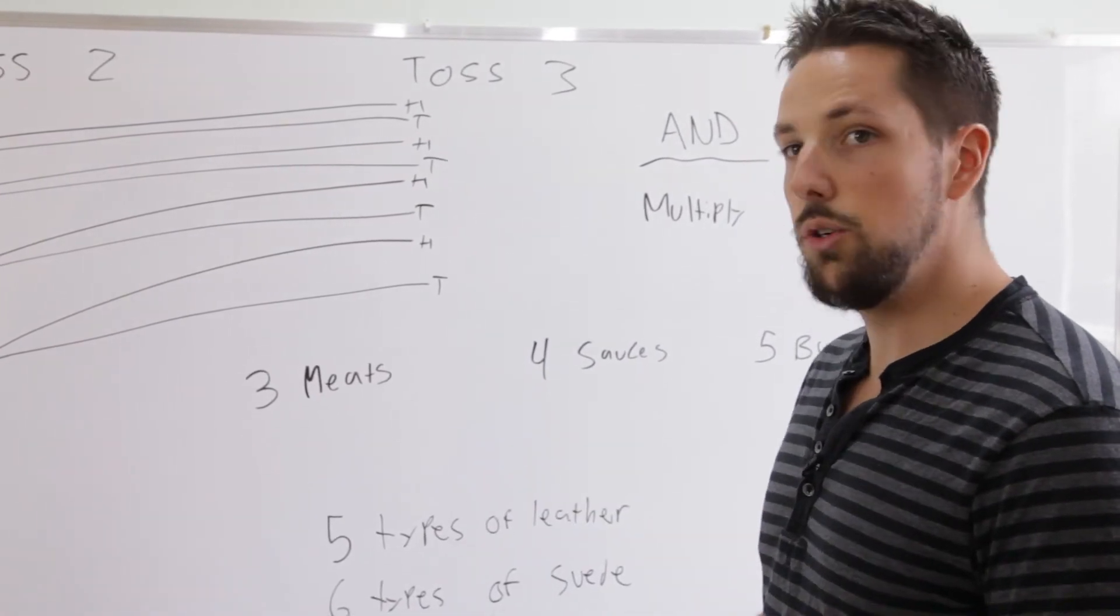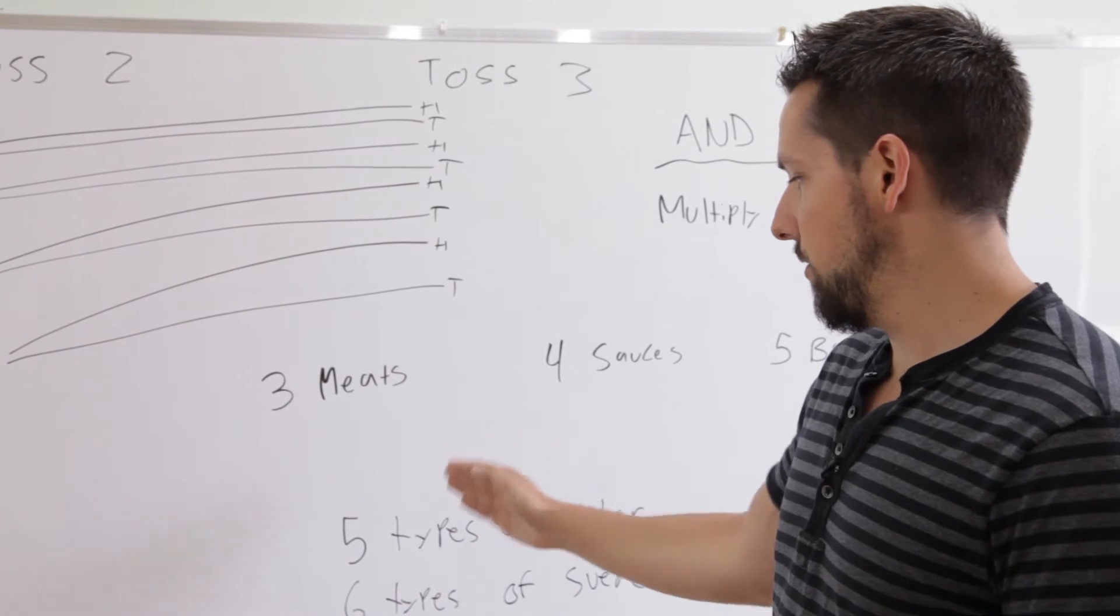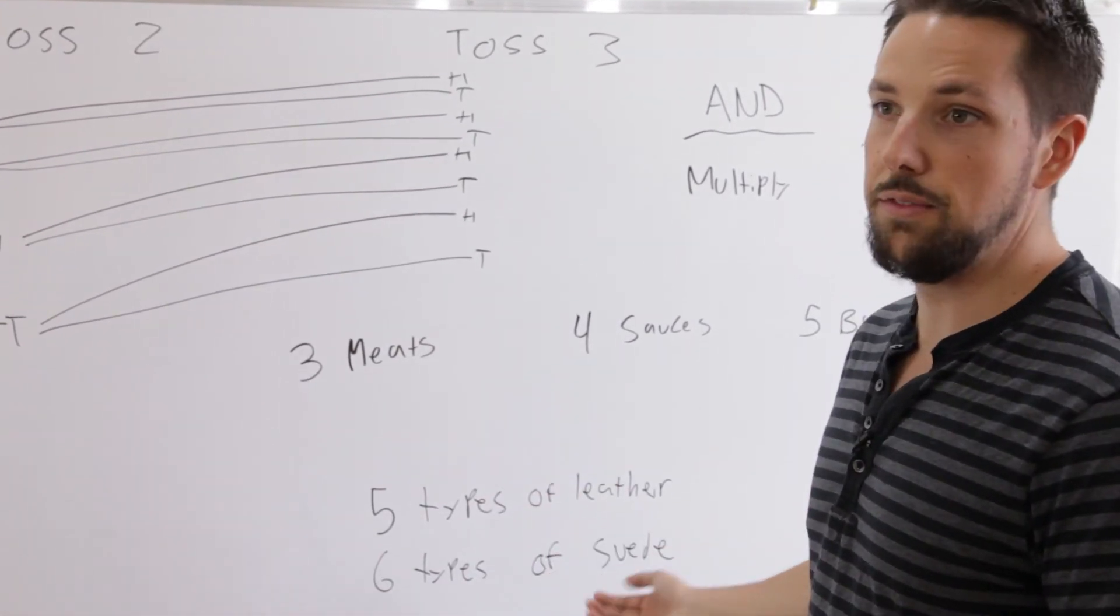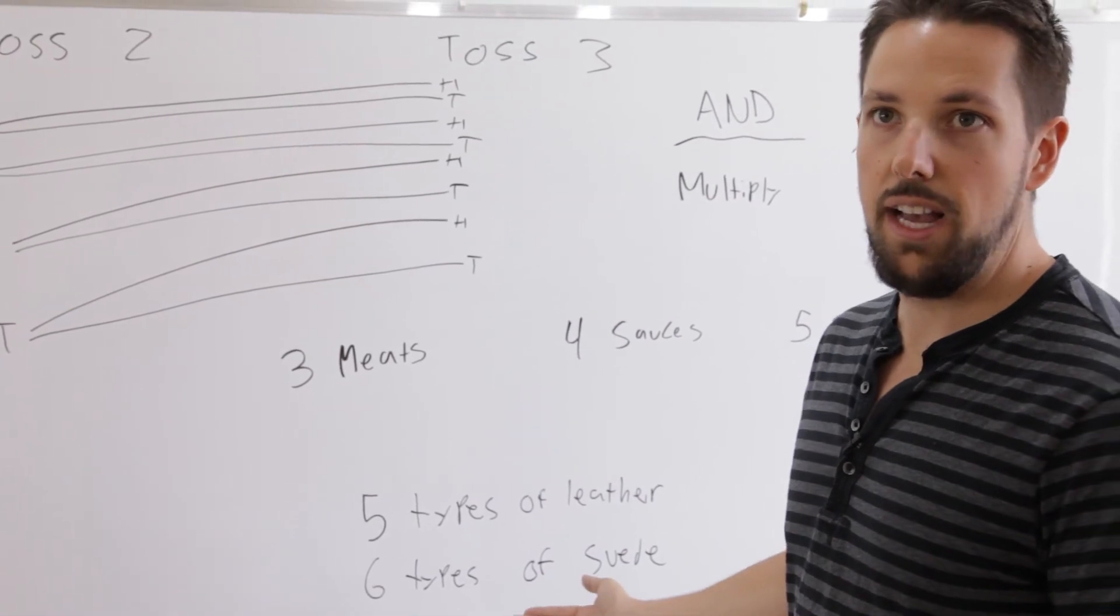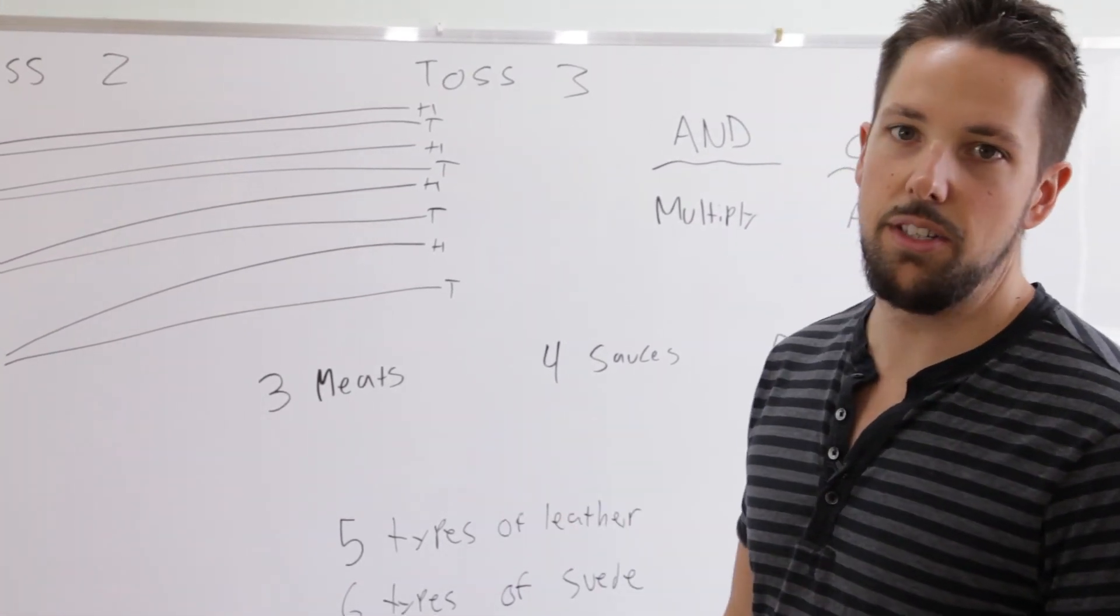Now say you're buying a car and you have two options of picking your seat. You can have either five types of leather or you can choose from six types of suede. How many total options do we have? Or means addition. So five plus six, eleven total options.